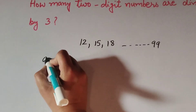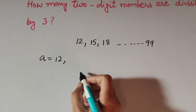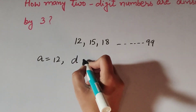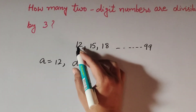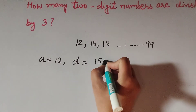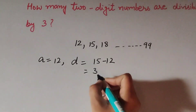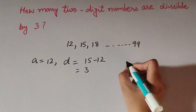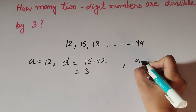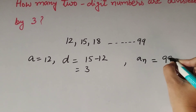In this AP, the first term a is equal to 12. The common difference d is equal to 15 minus 12, which equals 3. And the last term, denoted by aₙ, is equal to 99.